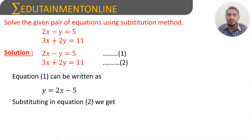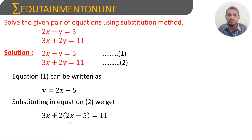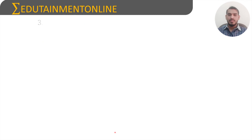Substituting y equals 2x minus 5 into equation 2, we write 3x plus 2 times (2x minus 5) equals 11. Multiplying out, we get 3x plus 4x minus 10 equals 11.